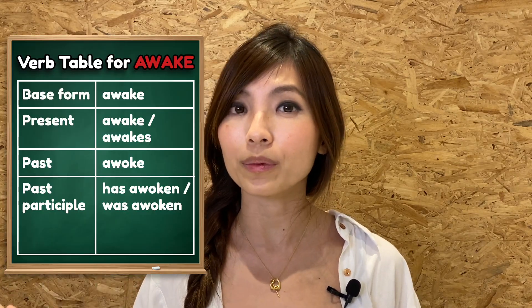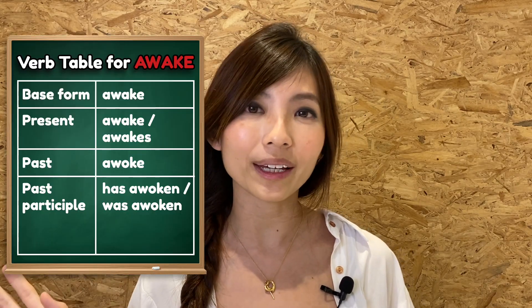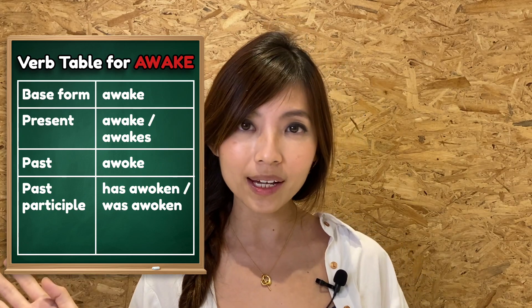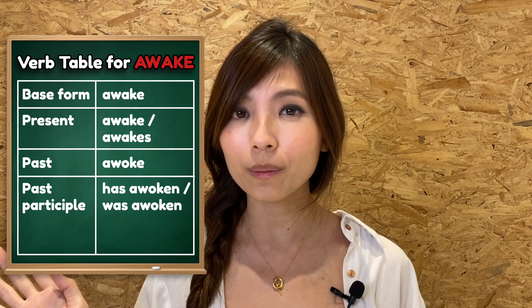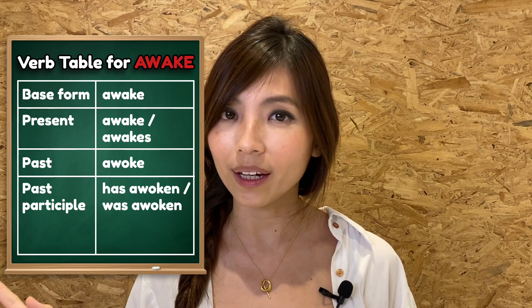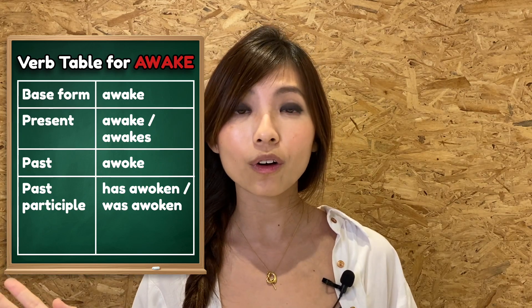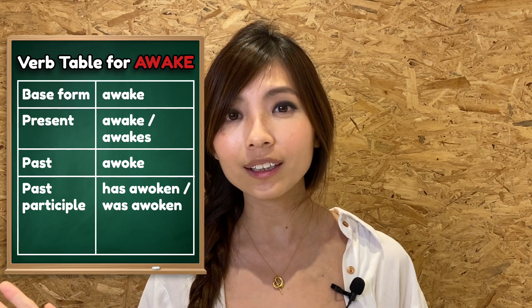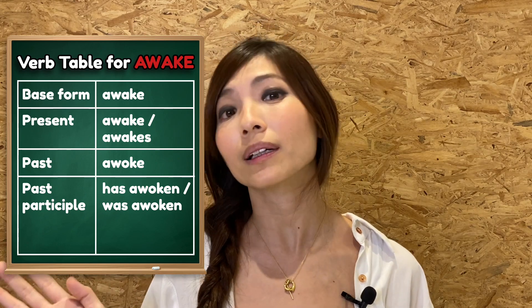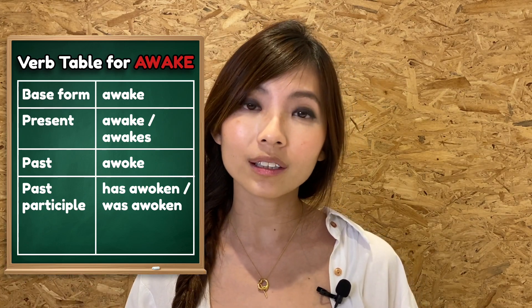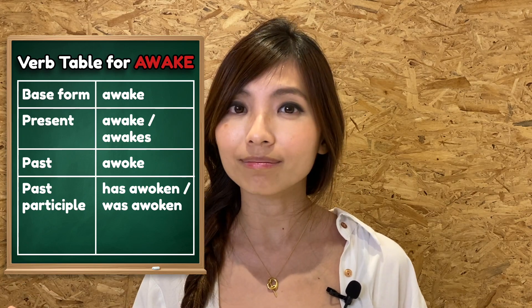On this side, you will be able to see all the verb forms of the word awake. In the base form, you have awake. In the present tense form, you have awake or awakes. In the past tense form, you have awoke. And finally, in the past participle form, you have has awoken or was awoken.